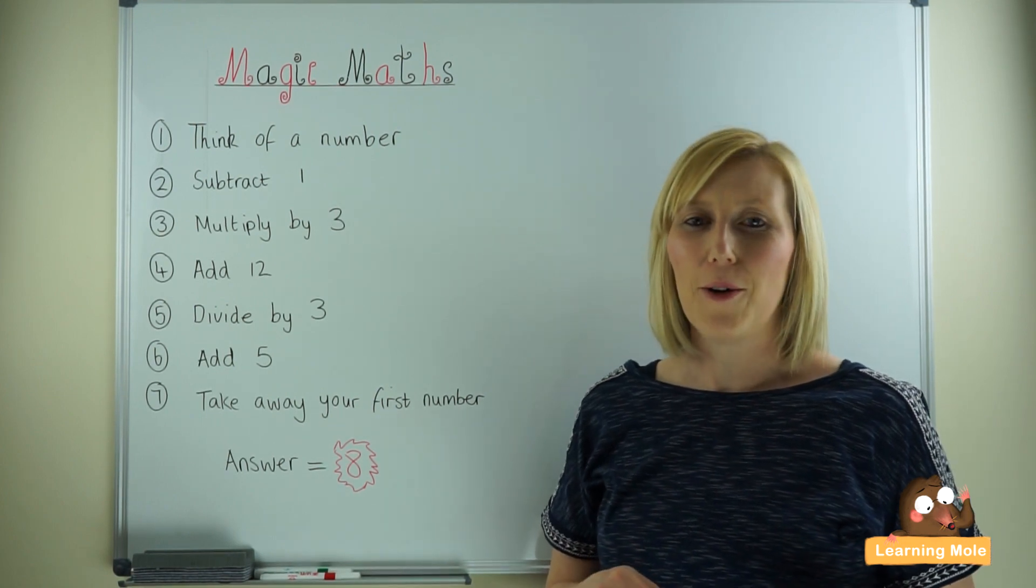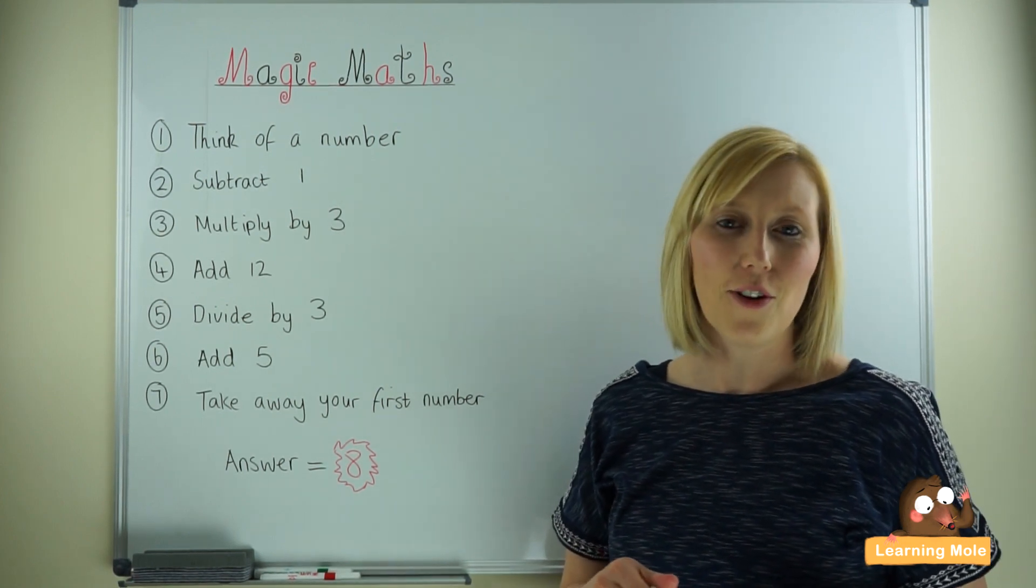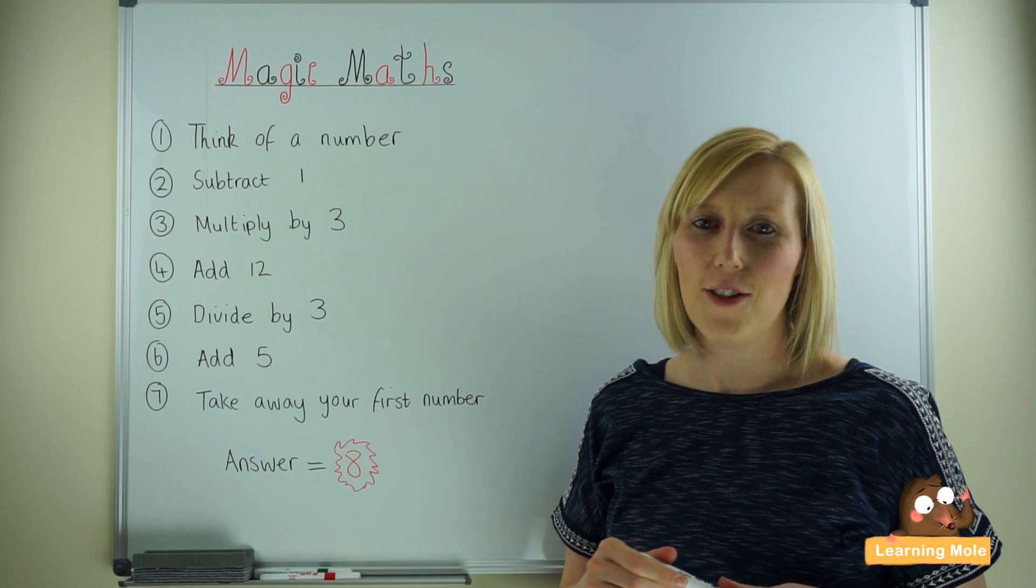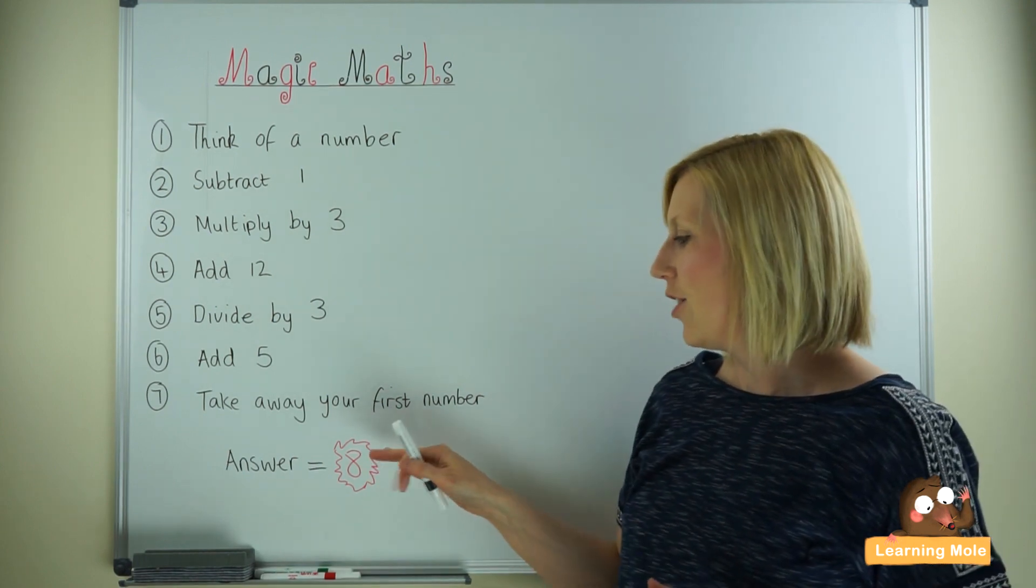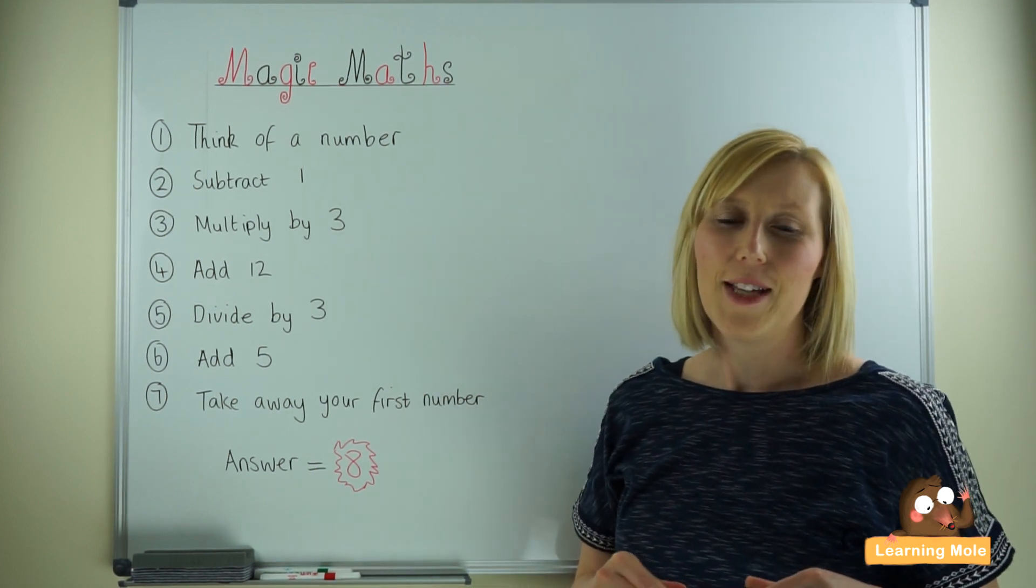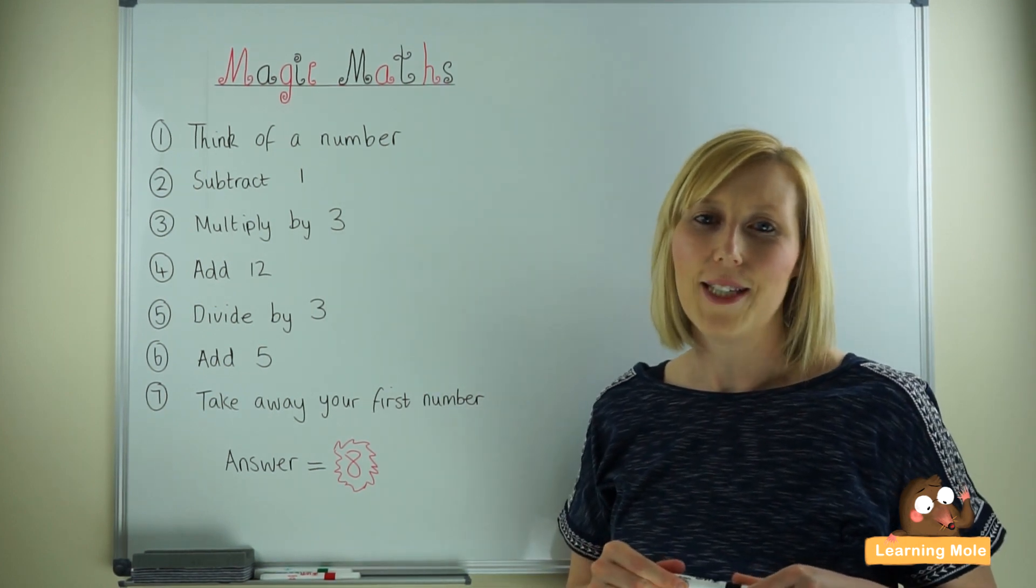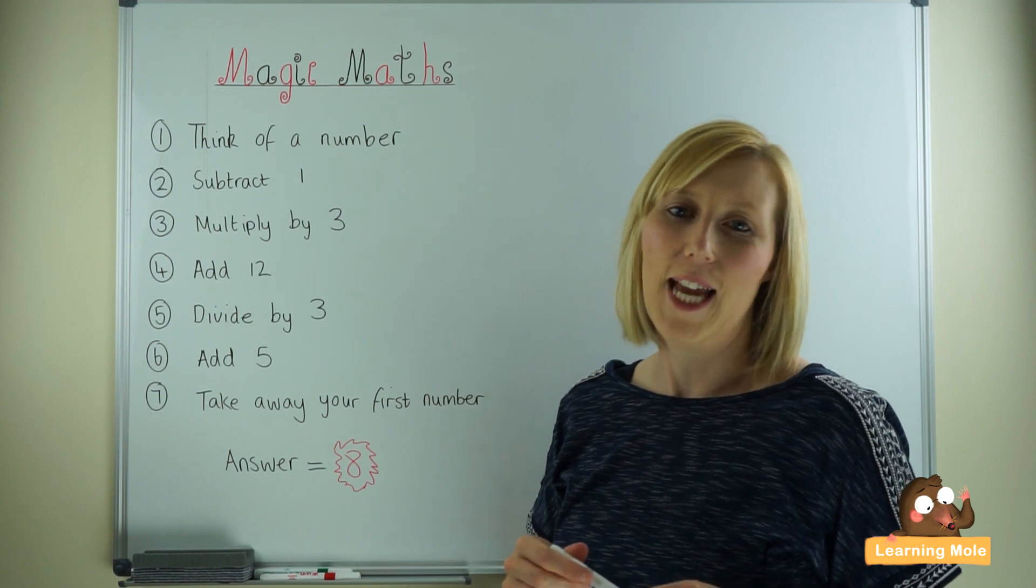It's magical because it doesn't matter what number you start with. As long as you follow the formula you will always get to the same number. You'll see your child's face light up in delight as they challenge their family members and friends, and they can always guess the number they're going to get to.